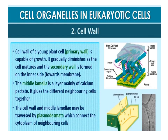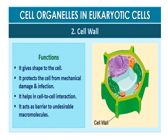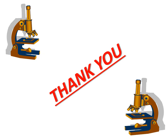The cell wall of young plant cells, the primary wall, is capable of growth, which gradually diminishes as the cell matures, and the secondary wall is formed on the inner side. The middle lamella is a layer mainly of calcium pectate which holds neighboring cells together. The cell wall and middle lamella may be traversed by plasmodesmata, which connect the cytoplasm of neighboring cells. The functions of the cell wall include giving shape to the cell, protecting it from mechanical damage and infection, helping in cell-to-cell interaction, and acting as a barrier to undesirable macromolecules.